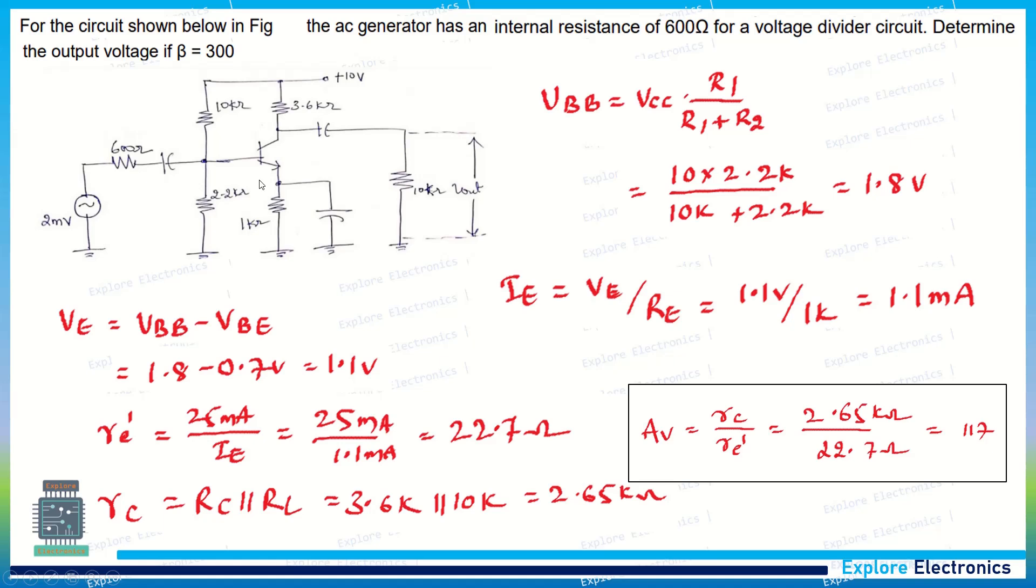We can assume VBE as 0.7 volts. So VBB is 1.8 volts minus VBE, that is 0.7, so we get the voltage across the emitter terminal as 1.1 volts.